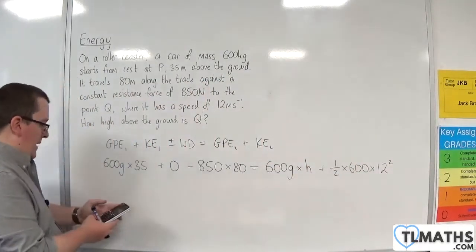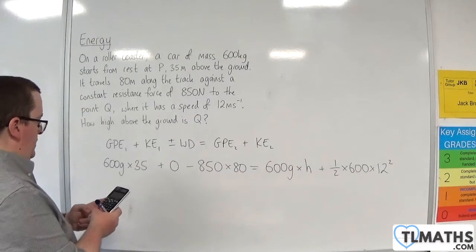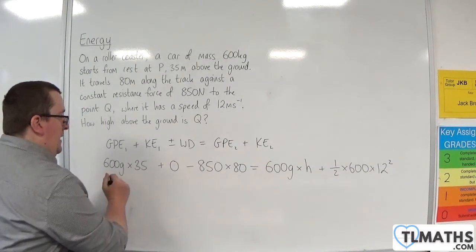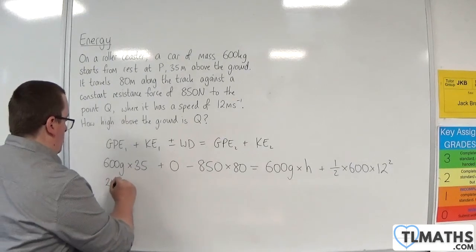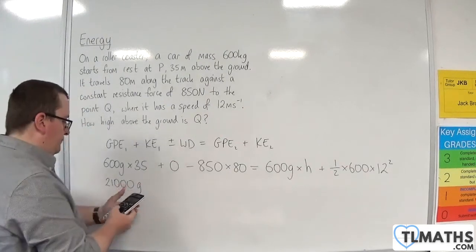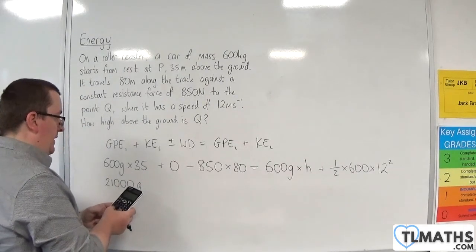Okay, so we have 600 times 35. So 21,000 G, 850 times 80.